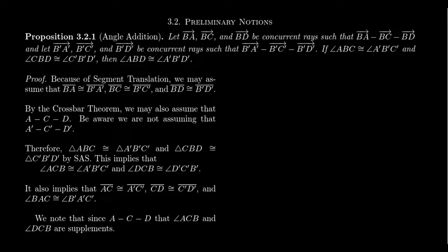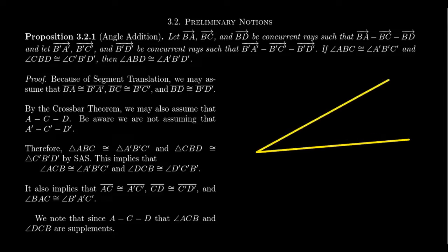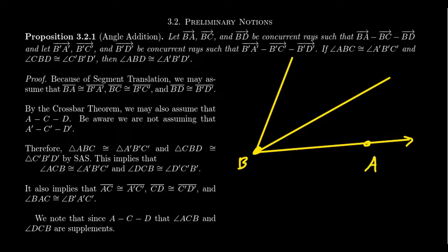Imagine we have some rays: BA, BC, BD. These are clearly concurrent rays because they all have the same vertex B. Let's say that BC is between BA and BD, with our usual notion of betweenness of angles. So we have something like BA, BC, BD, with the vertex at B, a point A, a point C, and a point D.